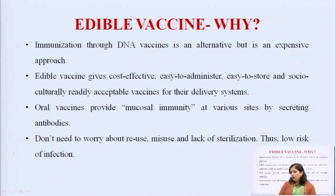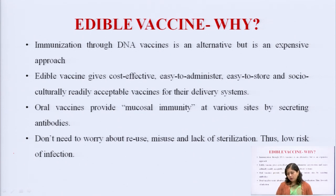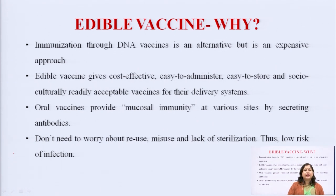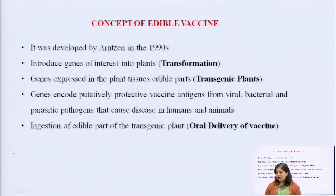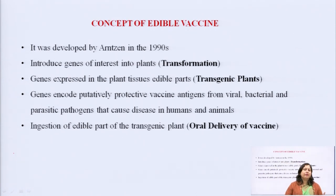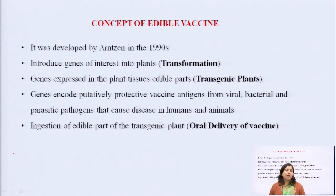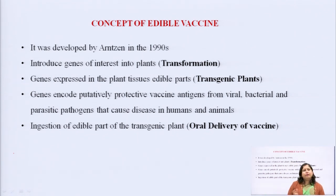Oral vaccines provide mucosal immunity at various sites by secreting antibodies. We do not need to worry about reuse, misuse, and lack of sterilization, thus there is a low risk of infection. With a normal vaccine we need an ice box and must maintain the temperature at all times, but when we are talking about edible vaccines, all these things are not required.